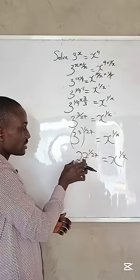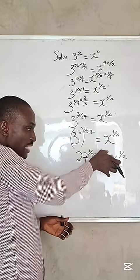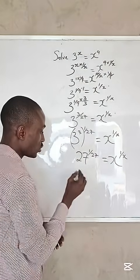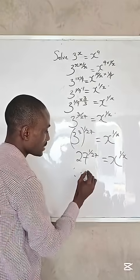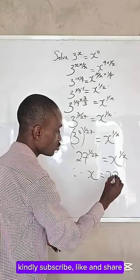If you look at what we have on the board: 27 raised to the power of 1 over 27, x raised to the power of 1 over x. Therefore, we can conclude that x equals 27.